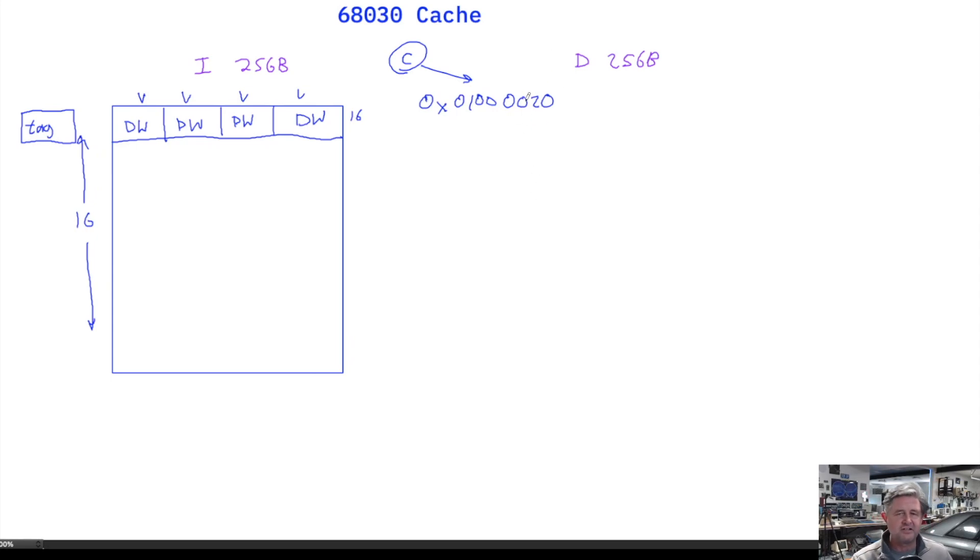Keep in mind, the instruction fetching mechanism always does 32-bit reads from memory. When it does it, the first thing it'll do is skip the first four-bit value, one hexadecimal digit, which represents where in a line you are. The next hexadecimal digit represents which of the 16 lines this address will be cached in.